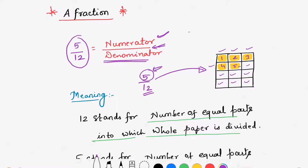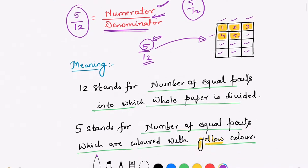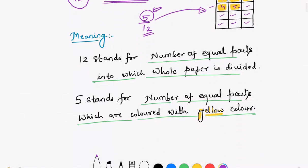So 5 by 12 is a fraction indicating the number of colored boxes out of 12 boxes. Out of 12 squares, 5 boxes are colored, so 5 by 12 is a fraction indicating the number of colored boxes.